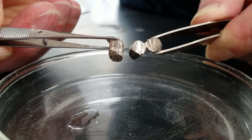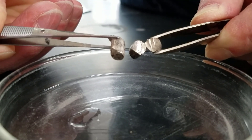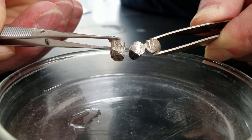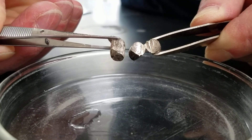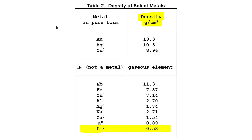One of the things you can't see in this video is how very light each small piece of lithium is. Under standard conditions, lithium is the least dense of all of the 60-plus metals. Lithium's density is about half that of water's, so it floats on water, as you'll see.